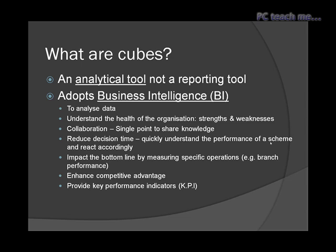Business intelligence is adopted because you can roll all this information up into an analytical process. For example, looking at key performance indicators — KPIs — you need to know if your business has done better this week than last week, this month from last month, this year from last year. You're not talking about transactions, you're talking about the analytical side, summary values. This is where cubes really excel, whereas the standard transactional report is time consuming. It's a collaboration — a single point to share knowledge, reduce decision time, and see impacts of specific operations like branch performance.